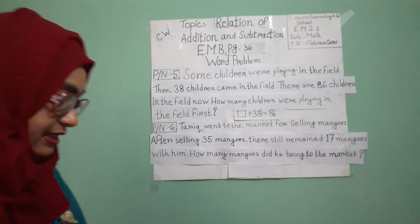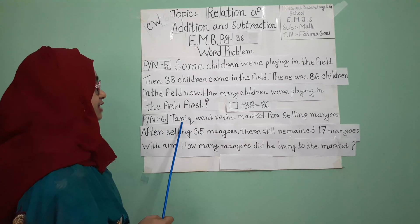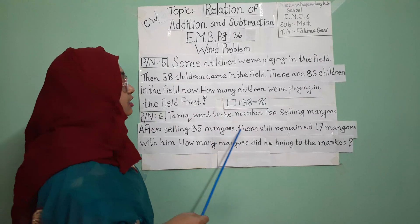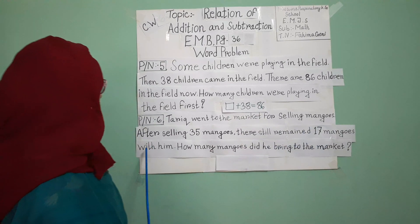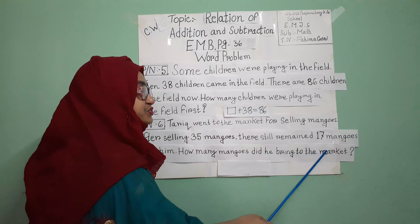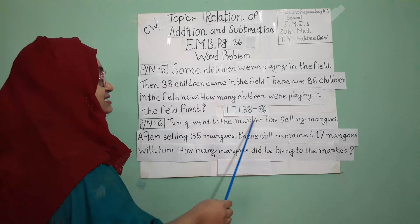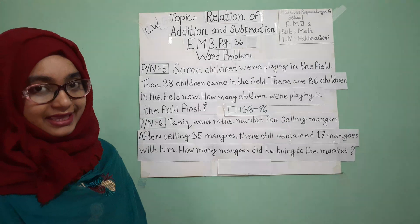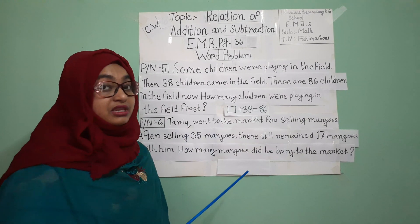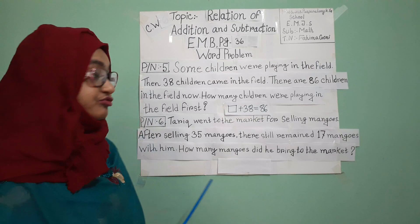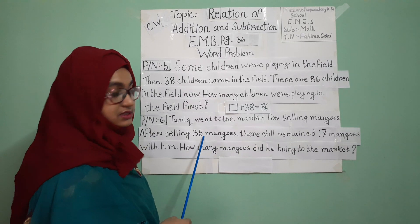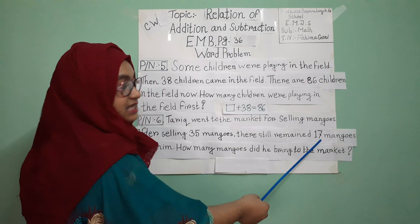Now we are going to problem number 6. Problem number 6 is: Tariq went to the market for selling mangoes. After selling 35 mangoes, there still remained 17 mangoes with him. How many mangoes did he bring to the market? Again, they didn't tell us how many mangoes Tariq brought to the market. We have to find it out. After selling 35 mangoes from the total number, he has sold 35 mangoes. Then how many mangoes are remaining? 17.